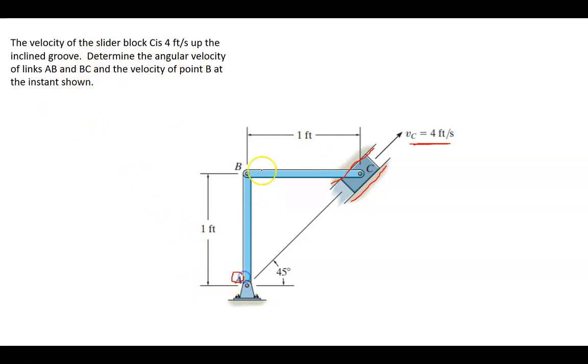Determine the angular velocity of links AB, so this is link AB, and link BC. So we want to determine the angular velocity of both, and the velocity of point B. That's the translational velocity of point B at the instant shown. The translational velocity of point B is a key thing to keep in mind here. It is the joint that connects links AB and BC.